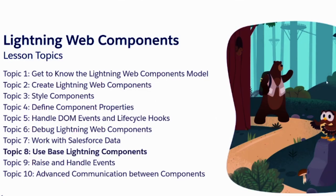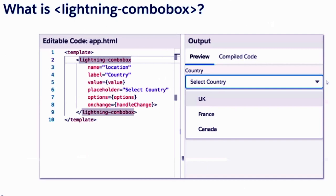Let's go to using base lightning components. We tried a few base components: card, button, tab set, tab. These are out-of-the-box components. We also have components like a combo box.